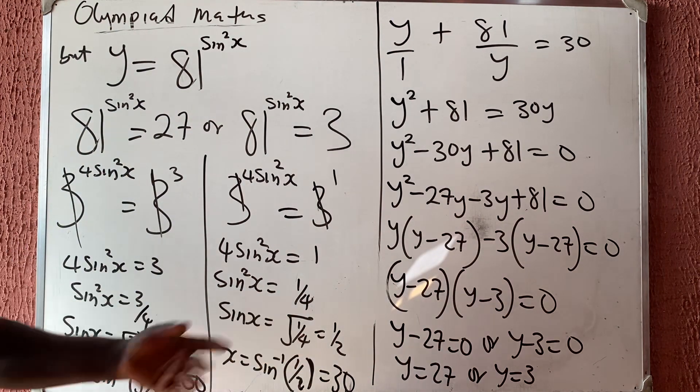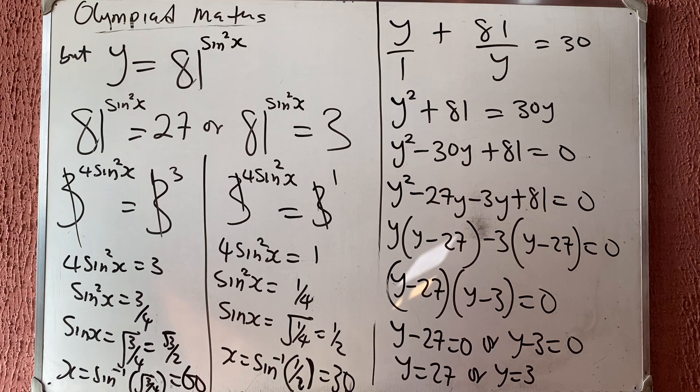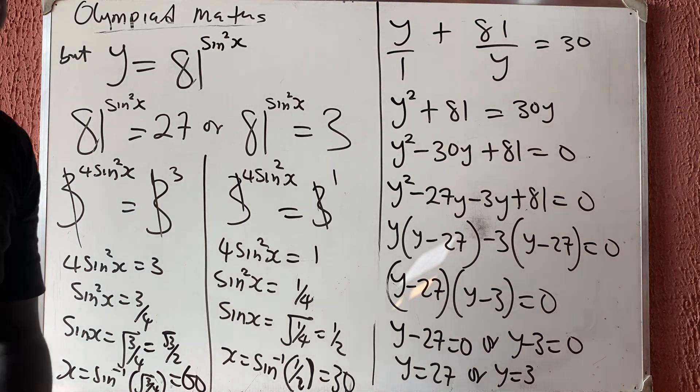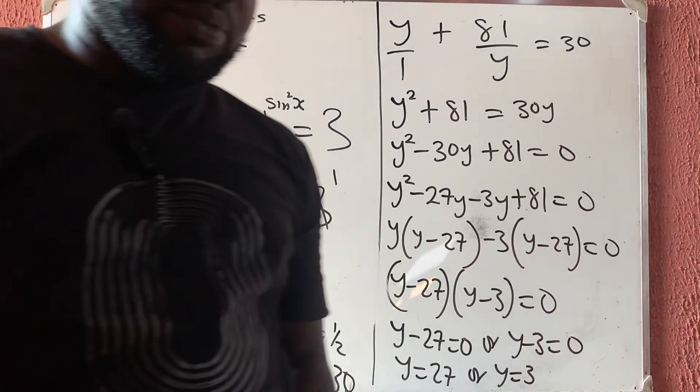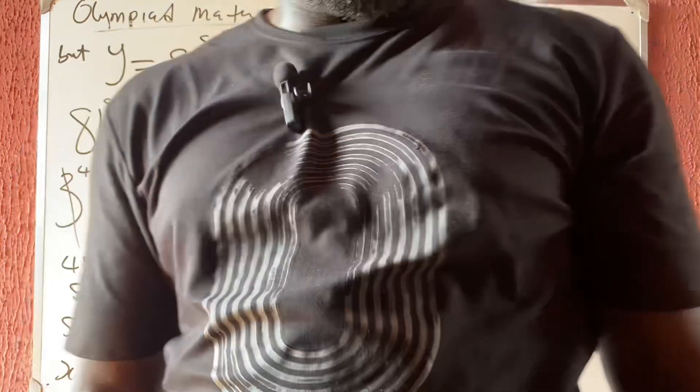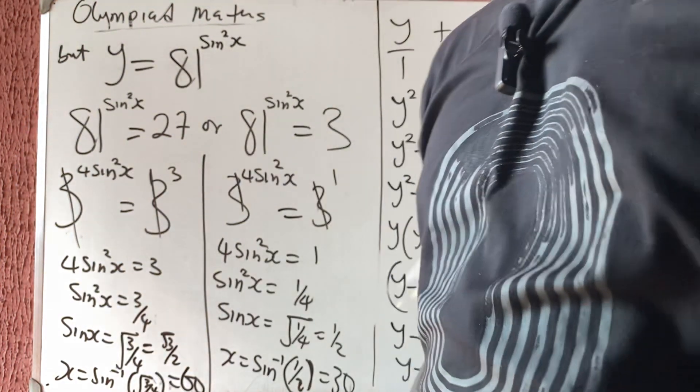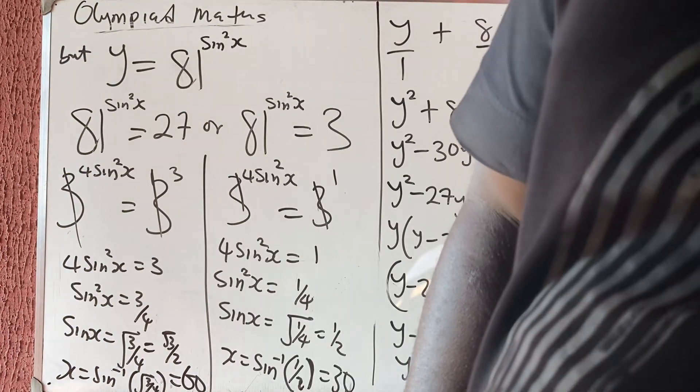So the final answers are x equals 60 degrees and x equals 30 degrees. Thank you very much for watching — please like, share, and subscribe.